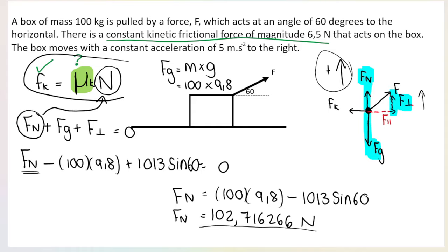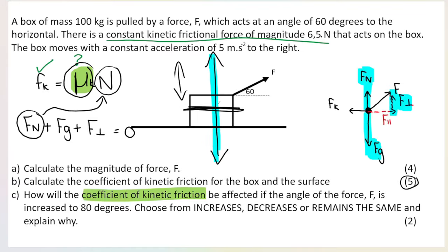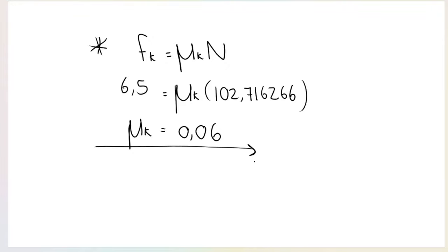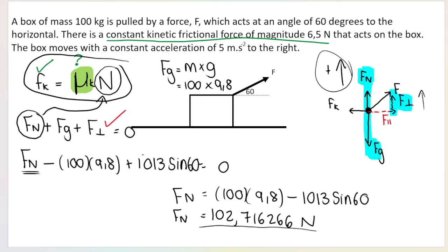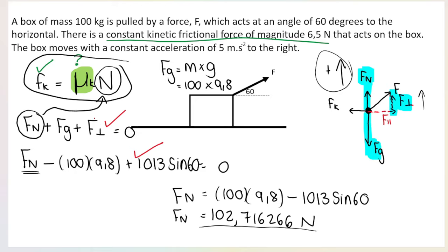Now I use the formula: μk equals Fk divided by N. The normal force is 102.716... — don't round it off — and friction was given as 6.5 newtons. Massive teacher tip: you never substitute friction as negative in this formula; friction always goes in as positive. Dividing 6.5 by the full stored value gives μk equals 0.06, which I may now round to two decimal places because this is my final answer. Coefficients are unitless. You get five marks for this section — two for finding the normal force and three for the μk calculation.